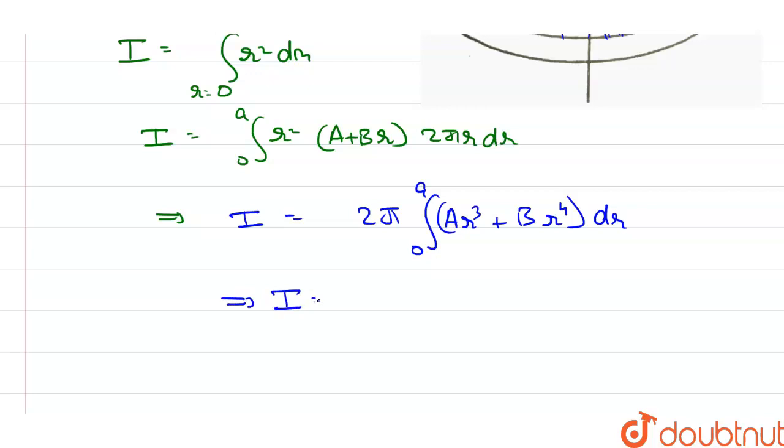This implies I is equal to 2π into [A r⁴/4 at limits a to 0, plus B into r⁵/5] integrated from 0 to a.